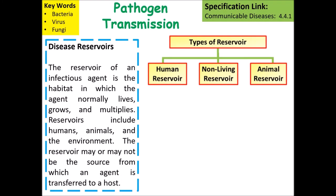First, we consider what are called disease reservoirs. A disease reservoir is a habitat in which the infectious agent normally lives, grows and multiplies. Reservoirs can include human reservoirs, animal reservoirs and non-living reservoirs.